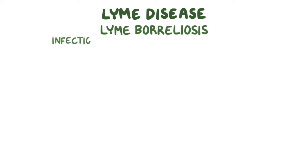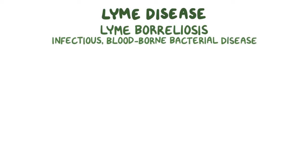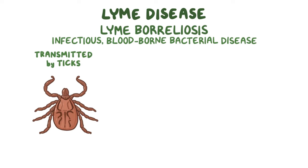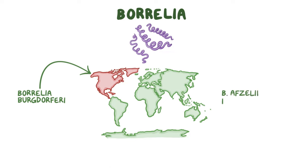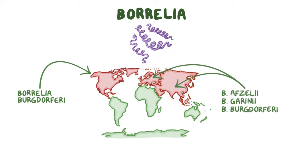Lyme disease, or Lyme Borreliosis, is an infectious blood-borne bacterial disease transmitted by ticks. It's caused by Borrelia burgdorferi species. The genus Borrelia contains several species. Lyme disease in people is caused primarily by Borrelia burgdorferi in North America, and by B. afzelii, B. garinii, and B. burgdorferi in Europe and Asia. In domestic animals, only B. burgdorferi is confirmed to cause Lyme disease.